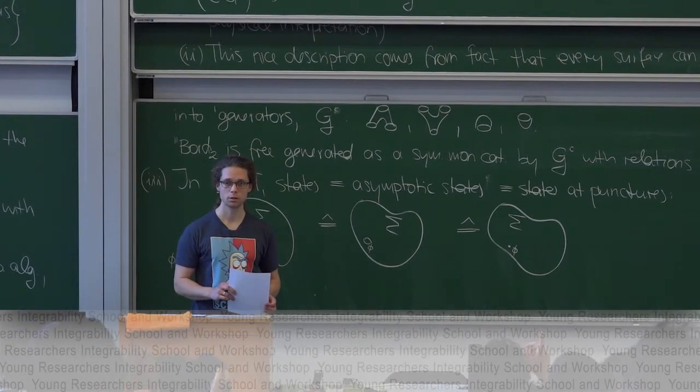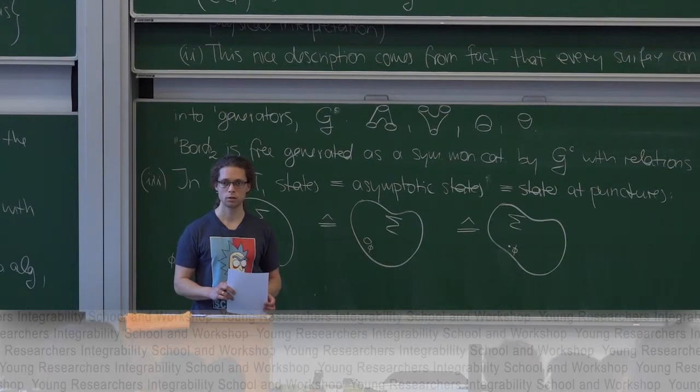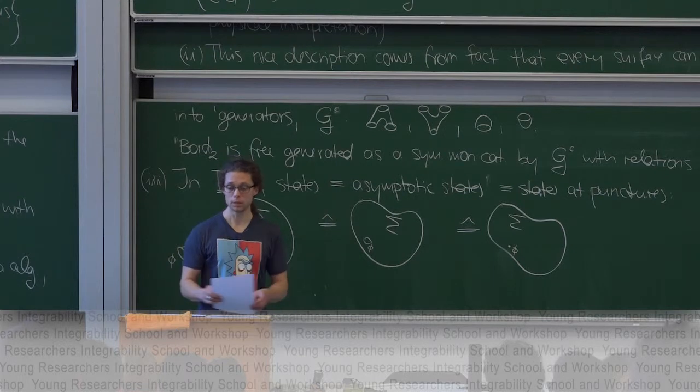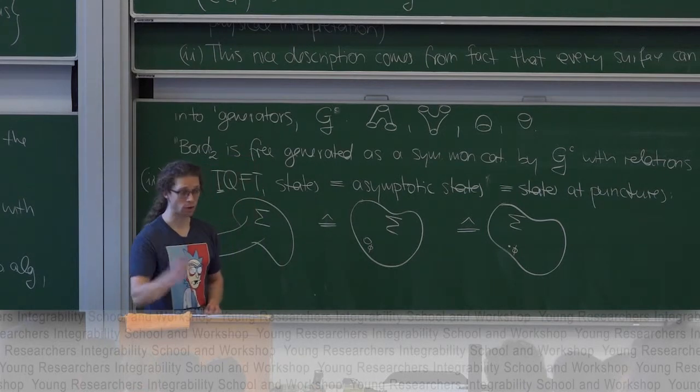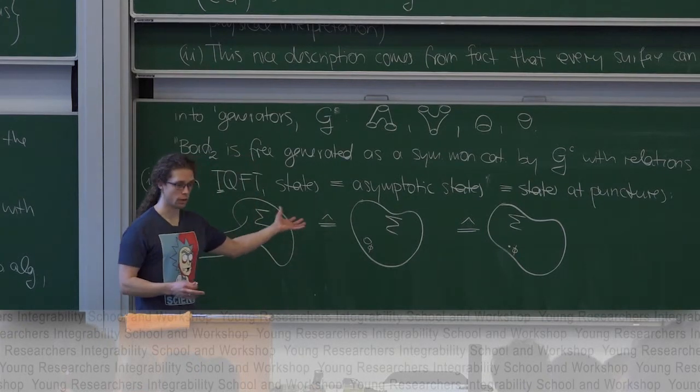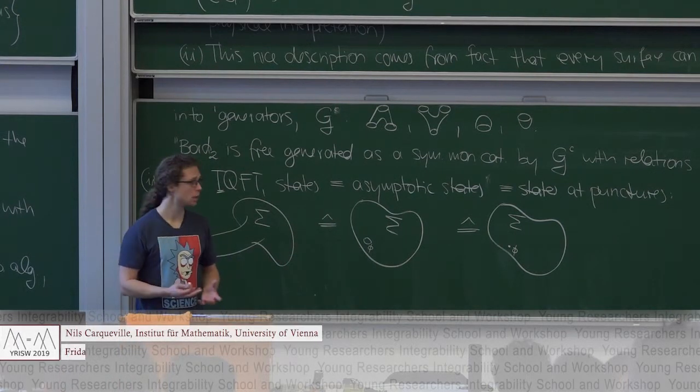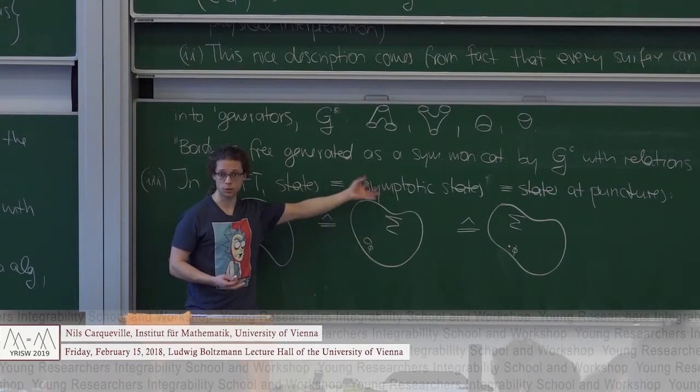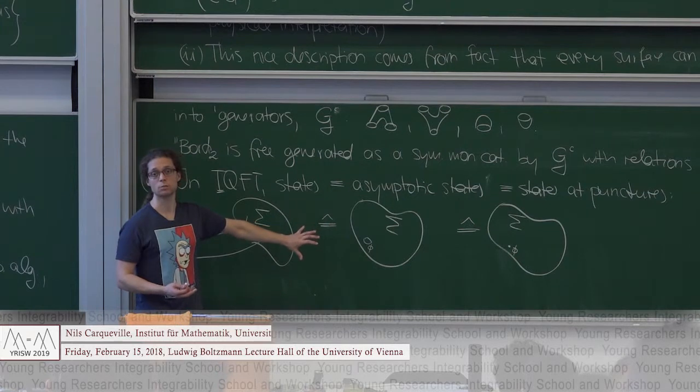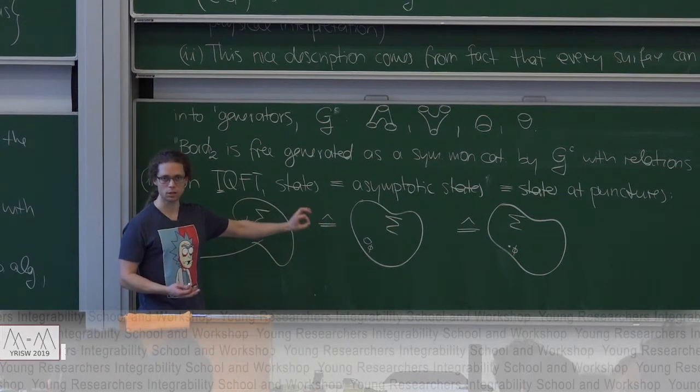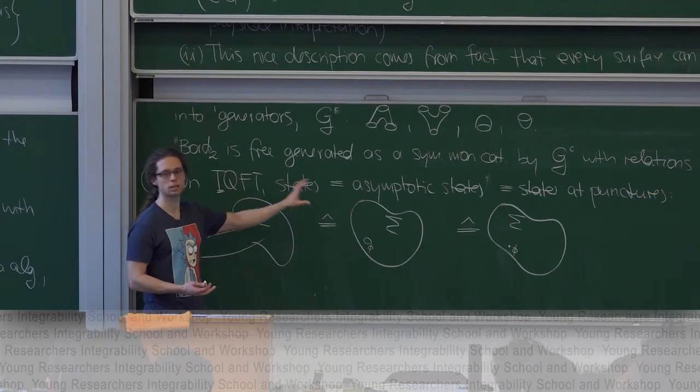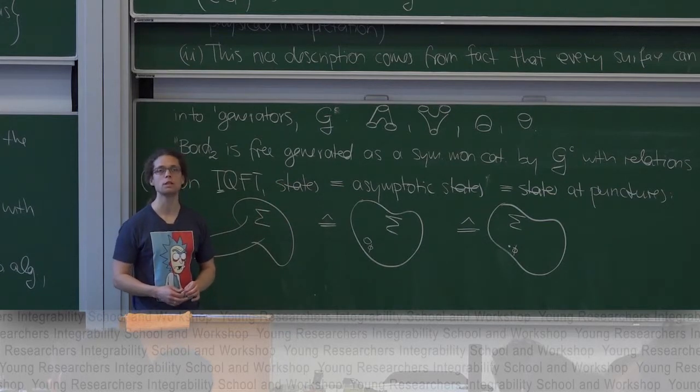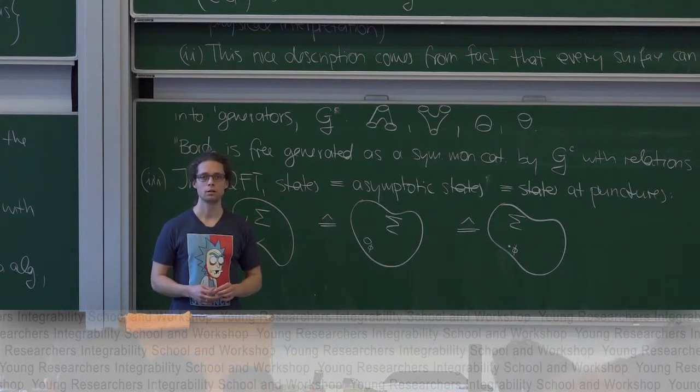After the break, I'll give a similar picture for boundary conditions and boundary condition-changing operators. Are there any questions or comments now? This picture that you described is a picture that people use in scattering amplitudes in string theory or something. Yes. But you're right. So these are the types of diagrams that are used, for example, to compute scattering amplitudes. But there, people I think tend to work with special states, namely asymptotic states. This is a distinction that I cannot make. And that's the point that I wanted to make. In TQFT, there's no distinction between states and asymptotic states.